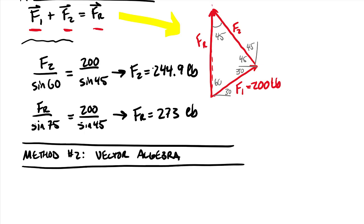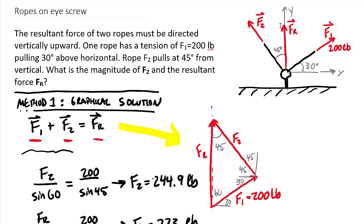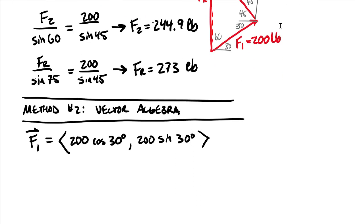To use vector algebra, I need to write the vector components of each force. F1 as a vector has a known magnitude of 200. Using bracket notation, that's 200 cosine of 30 degrees for the horizontal component, and 200 sine of 30 degrees for the vertical. Both are positive values because both horizontal and vertical components of F1 are positive. Let me define my coordinate system: horizontal to the right is X, and vertical is Y.